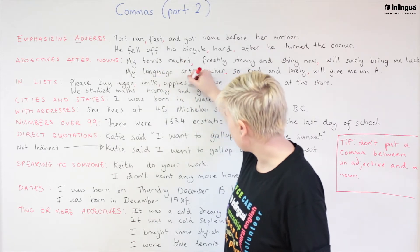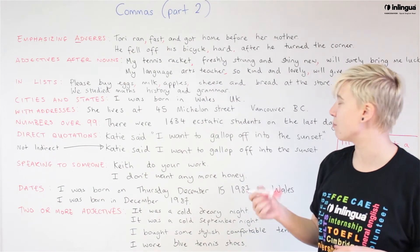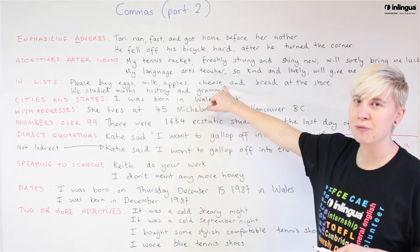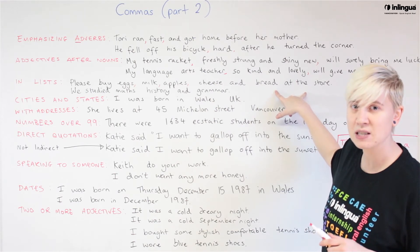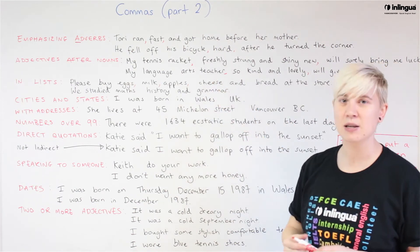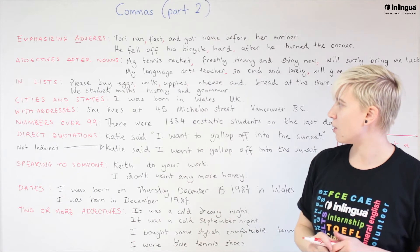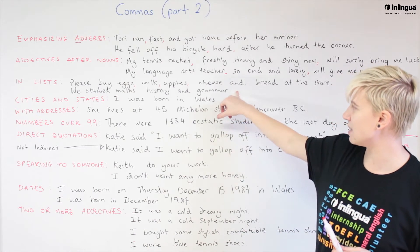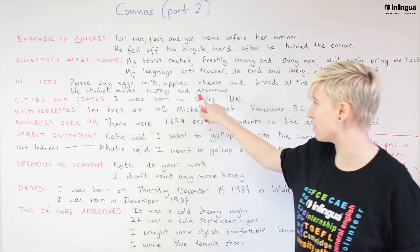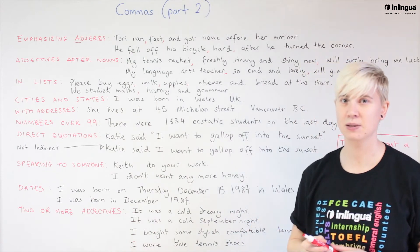Do we need a comma before 'and bread at the store'? Remember what we talked about in the first video — is 'bread at the store' a full sentence? No, it is not. So we do not need a comma between the conjunction and the last item on the list. We just need three commas in that sentence. Similarly: 'We studied maths, history, and grammar' — we only need one comma, because 'and grammar' is not a complete sentence. We just separate our two list items.